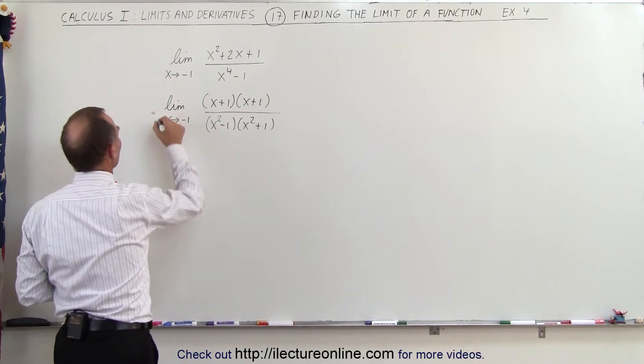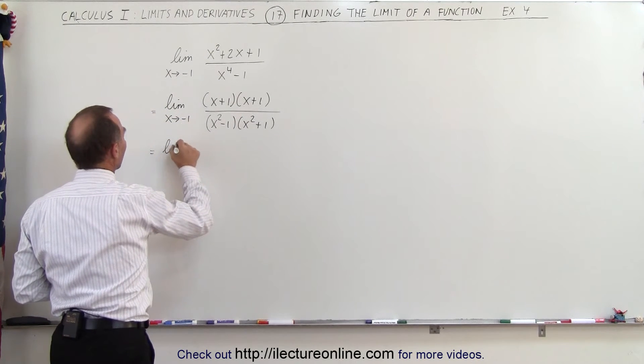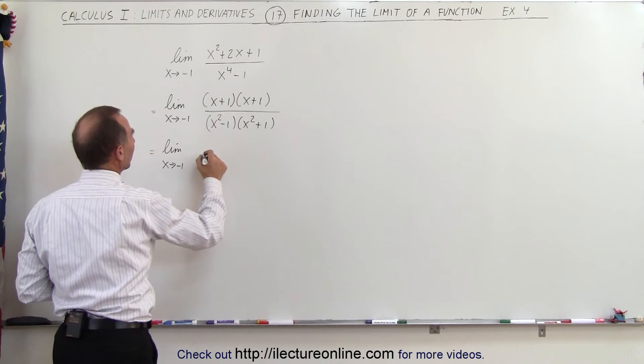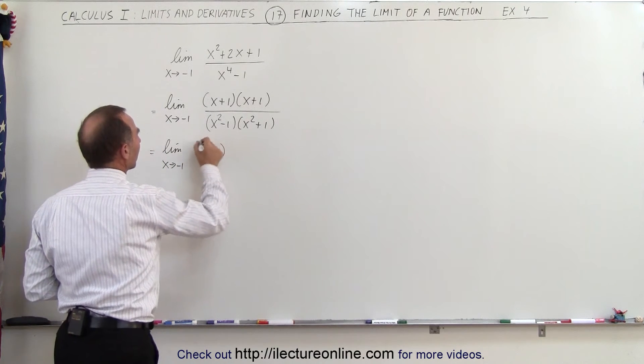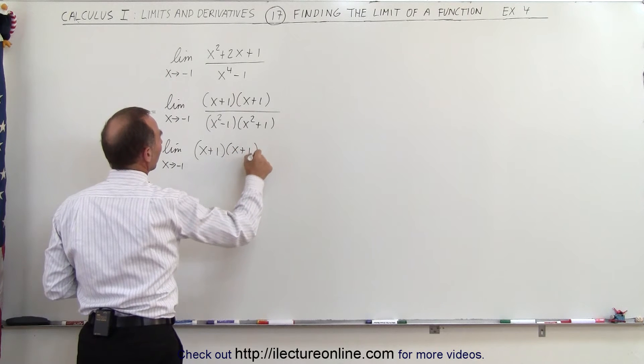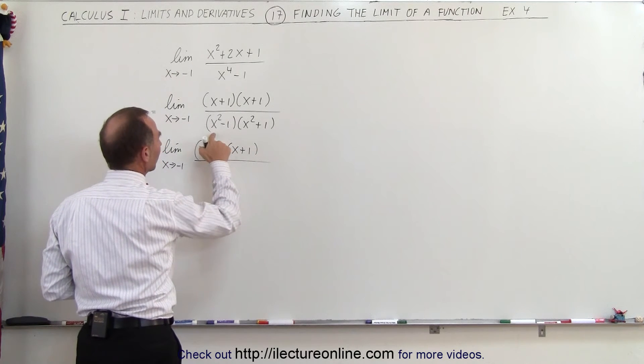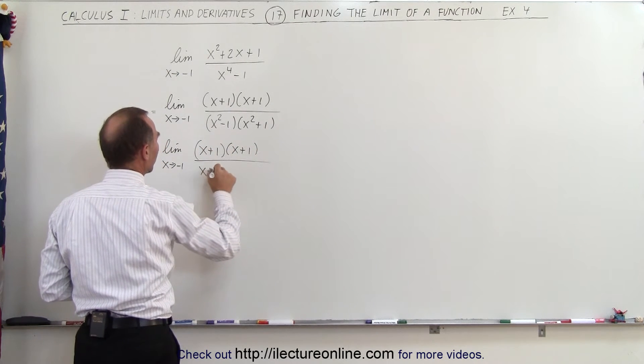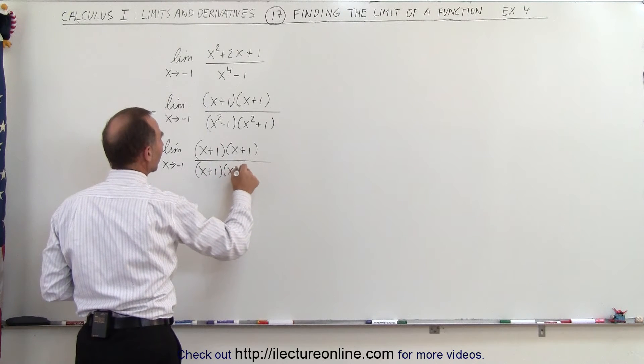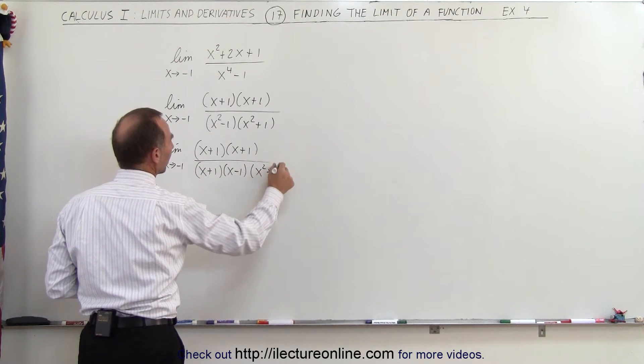So this becomes the limit as x approaches negative 1. In the numerator, we get x plus 1 times x plus 1. The denominator can now be written as a difference of squares, so this is x plus 1 times x minus 1 times x squared plus 1.